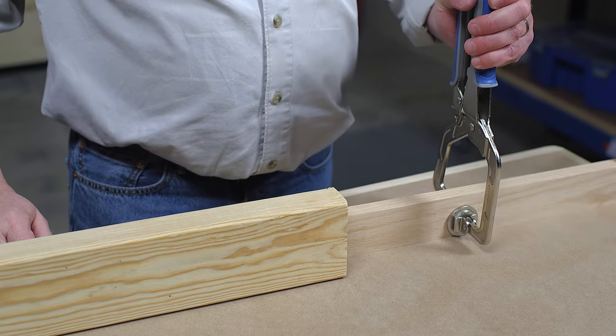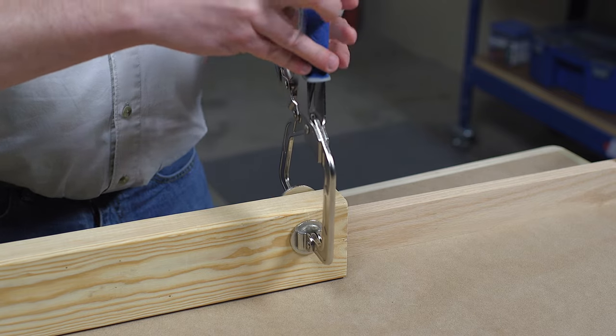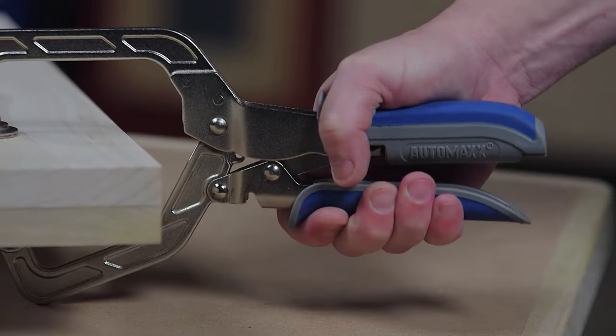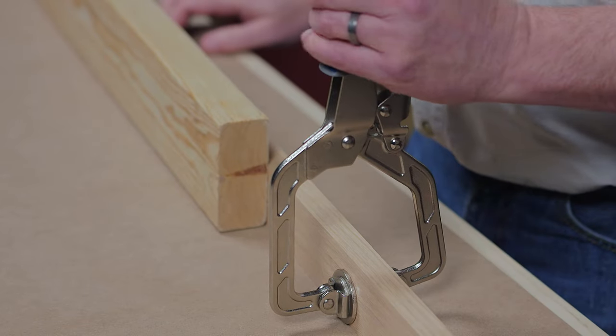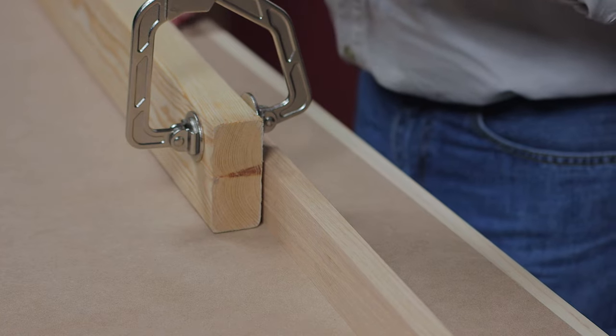Thanks to AutoMax Auto Adjust Technology, there's never a need to readjust wood project clamps when you move from one material thickness to another. Simply squeeze the clamp handles and AutoMax Technology adjusts the clamps automatically to the correct thickness, all while keeping the clamping pressure you desire.